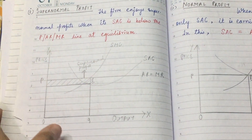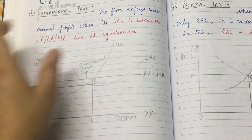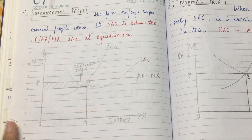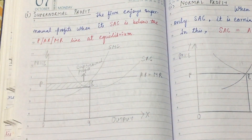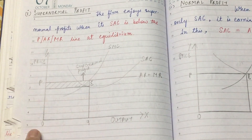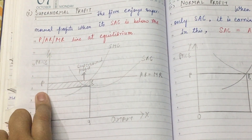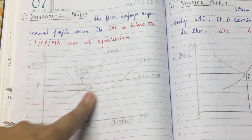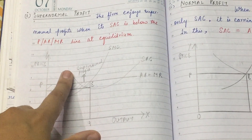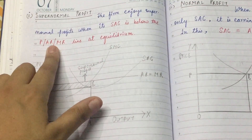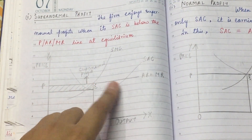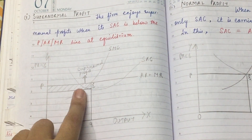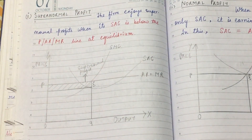The firm enjoys super normal profit when its SAC is below the price or AR/MR line at equilibrium. On the OX axis we measure output; on the OY axis we measure price. Because in a perfectly competitive firm P equals AR equals MR, the price line is straight. When SAC is below the price line and SMC intersects MR, the shaded area indicates the firm has gained super normal profit.